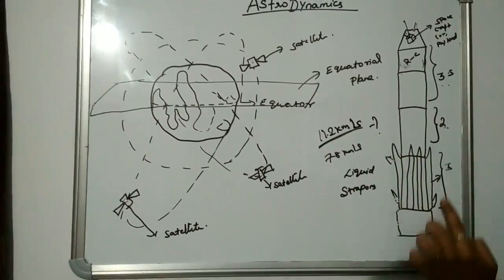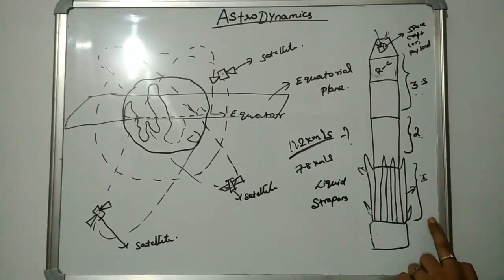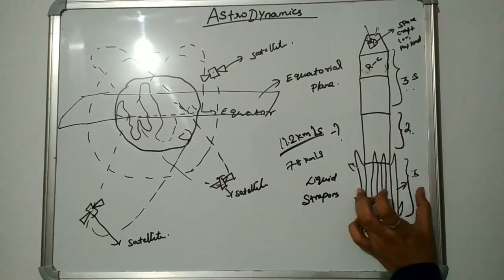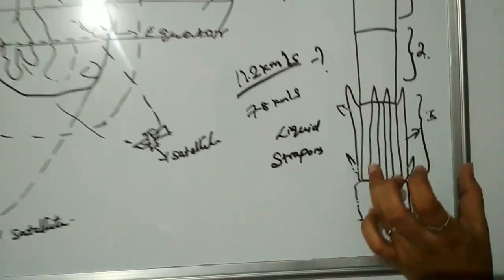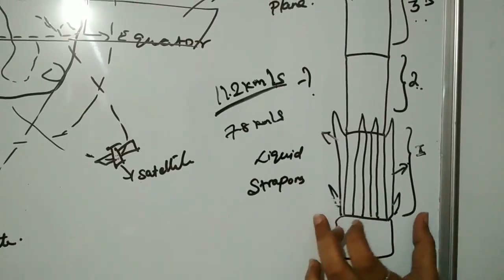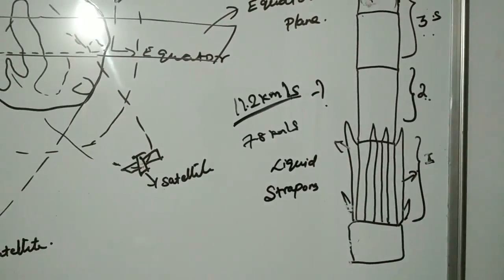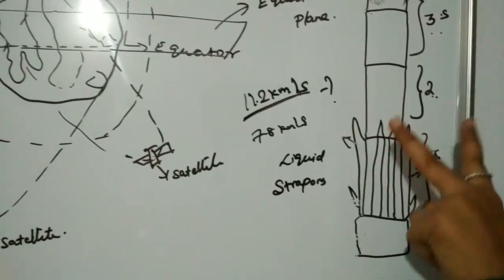These are called liquid strap-ons where the liquid propellants are filled. These are initial stages which are used when the rocket starts up. After which, the first stage comes out, consisting of liquid and solid propellants.